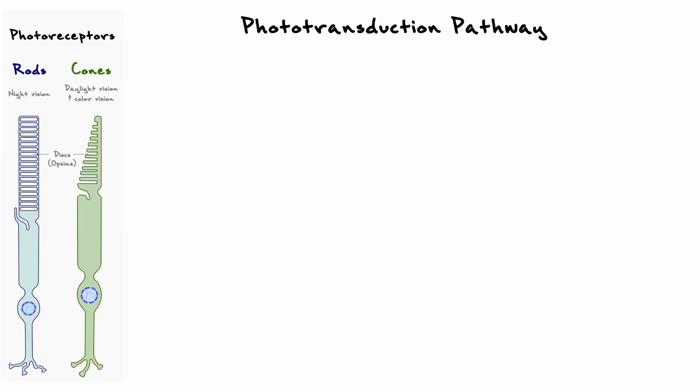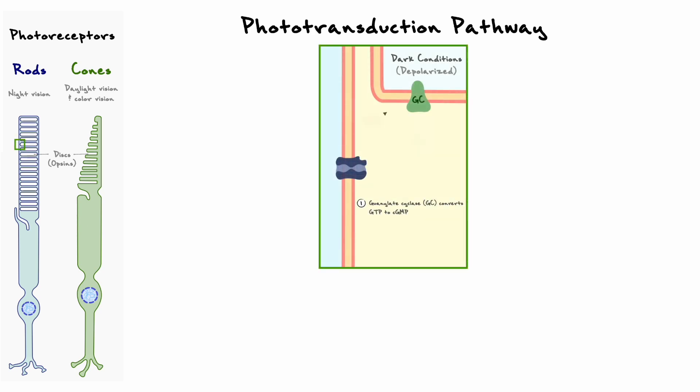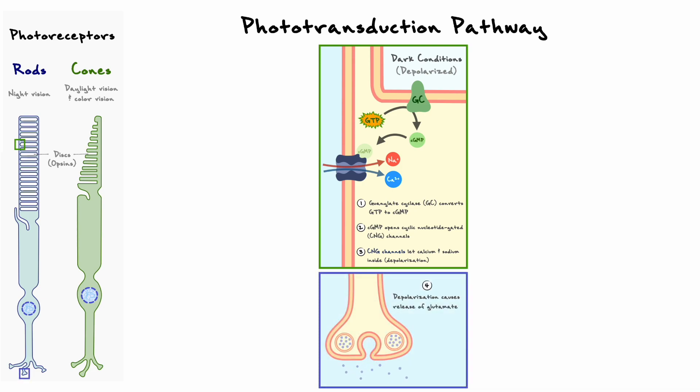Now, we first need to understand how photoreceptors behave in the dark. The following mechanism that we will consider in rods is also applicable in cones. The first important thing to know in this mechanism is that in the dark, an enzyme by the name of guanylate cyclase continuously converts GTP to cyclic GMP, and in photoreceptors, cGMP is an intracellular ligand to the cyclic nucleotide-gated channels or simply CNG channels. When cGMP binds and opens CNG channels, these channels let calcium and sodium enter the cell, and with sufficient depolarization, photoreceptors release glutamate to signal to their downstream partners.